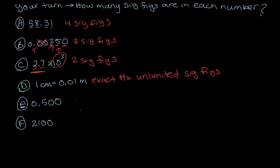For E, we have one non-zero number and trailing zeros to the right of the first non-zero number and to the right of a decimal point. So that is three sig figs.